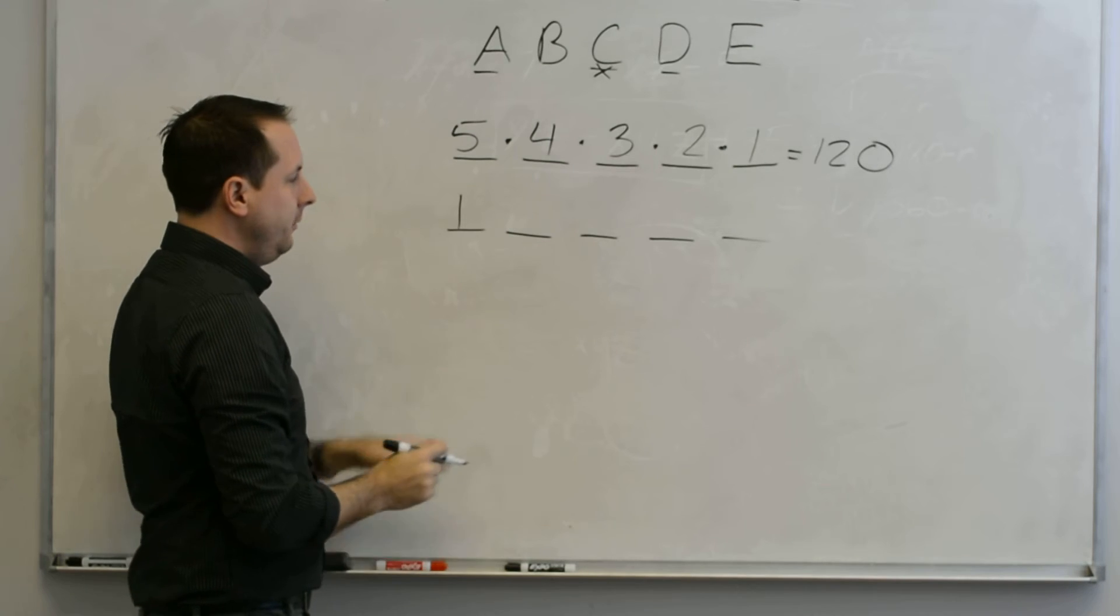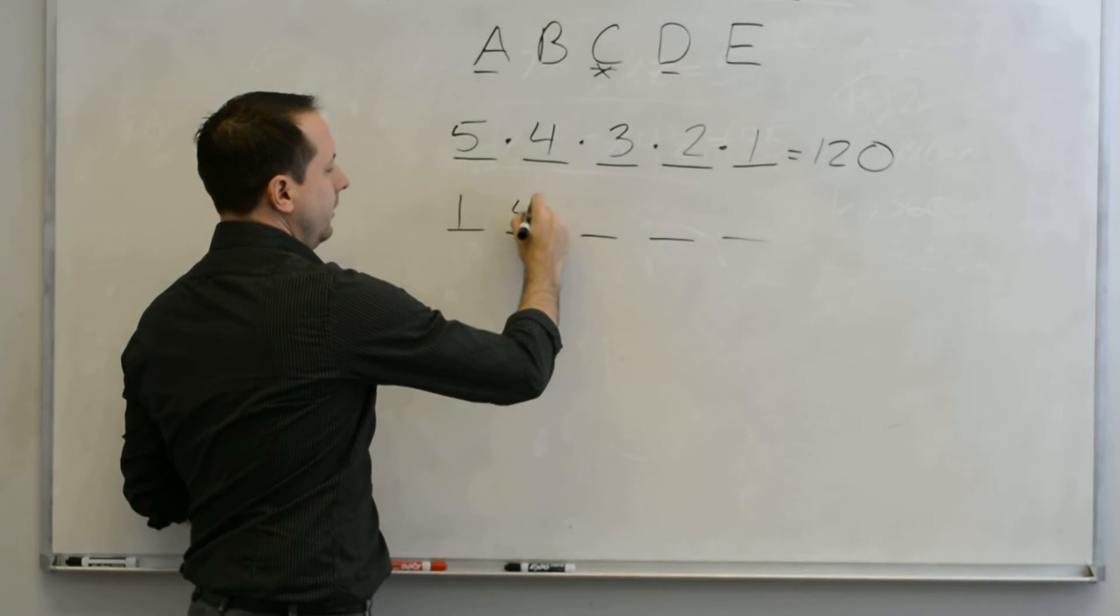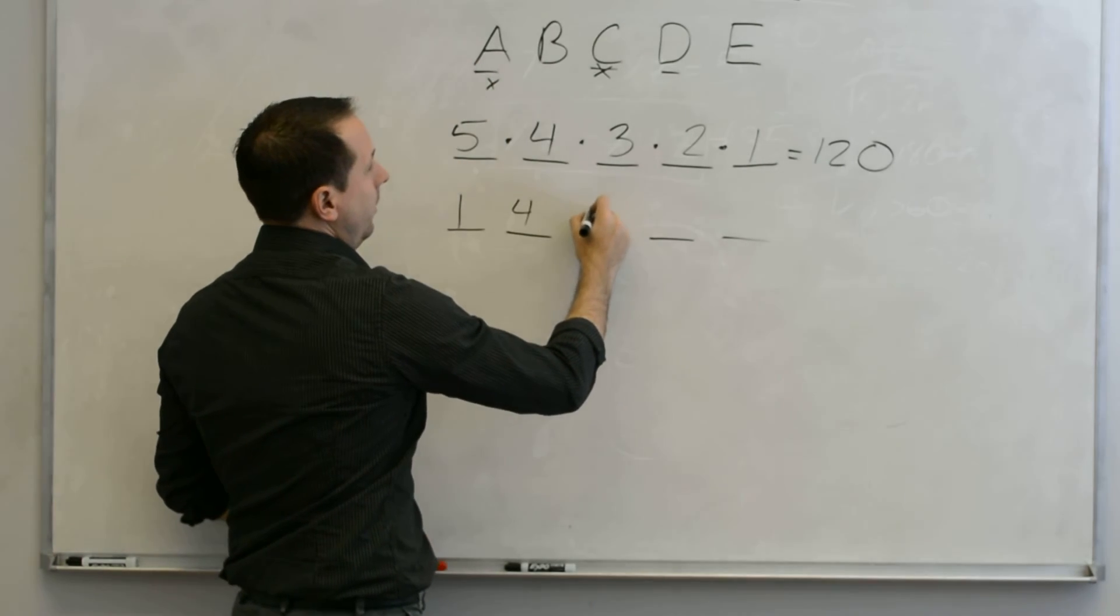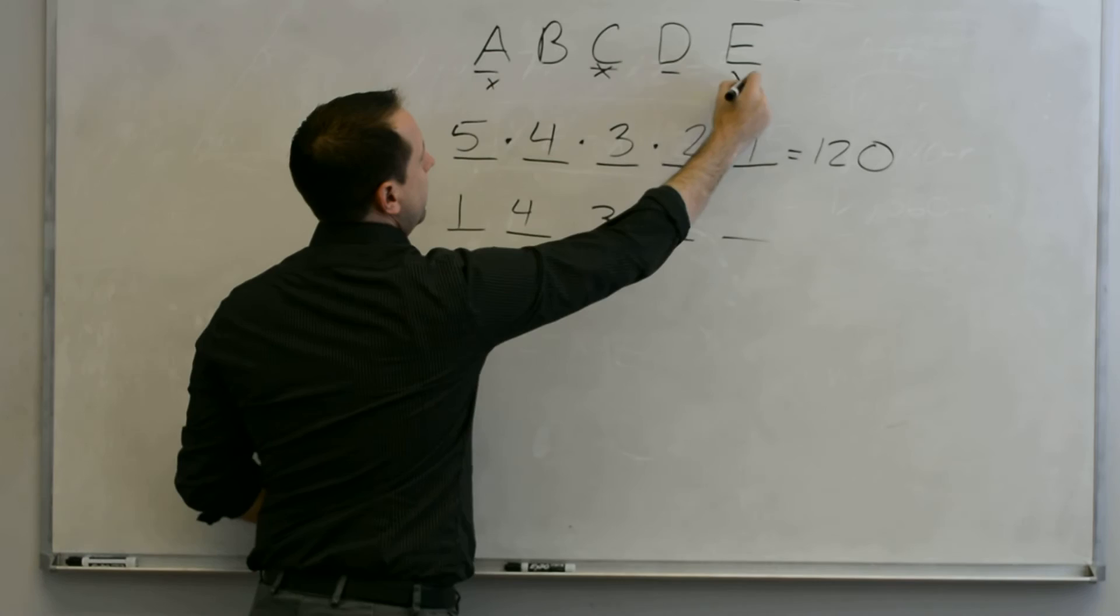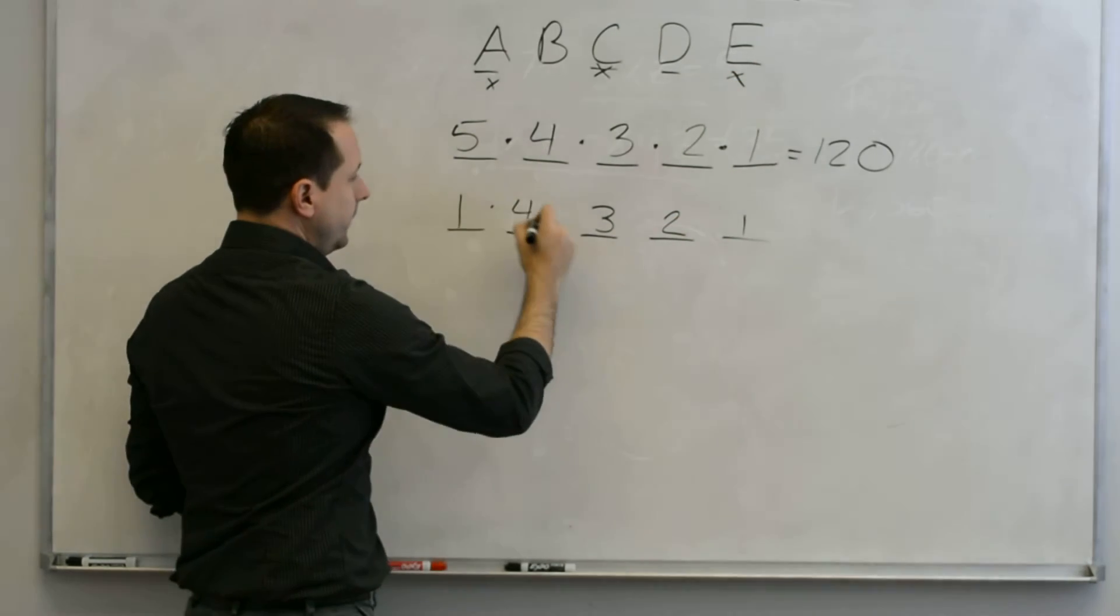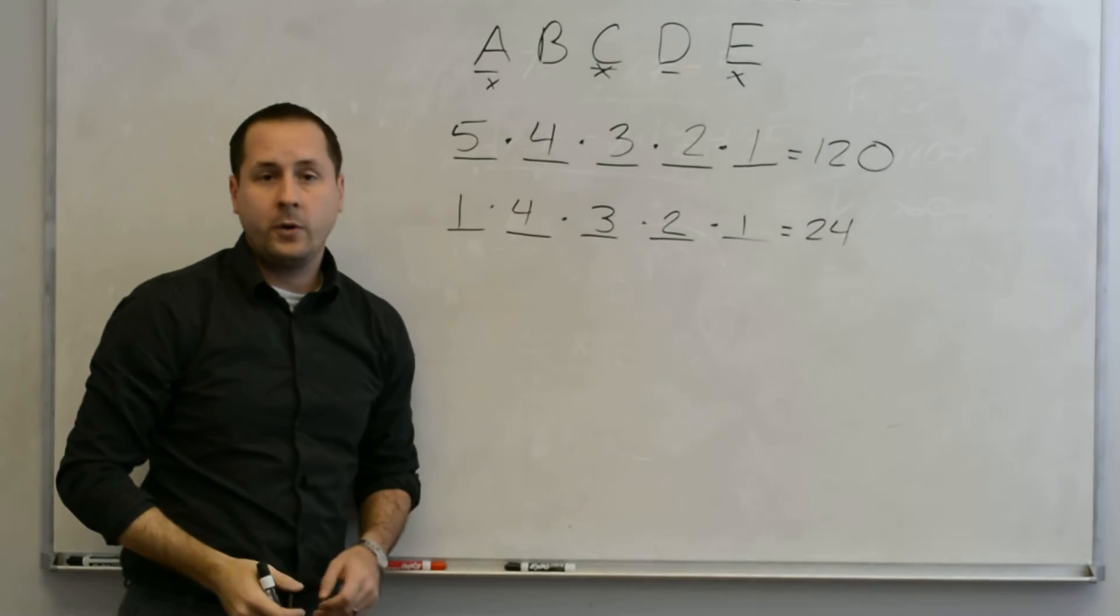I've used up C this time, so I've got four letters left. So let's say I picked A again, and then only three remaining now, and then two, and then one. Once again, you multiply that out, and you end up with 24 there.